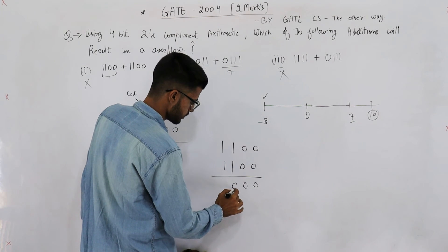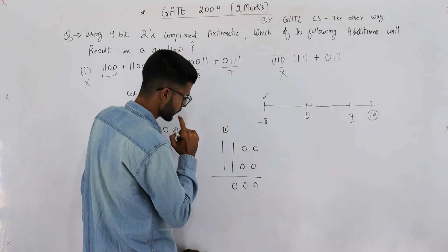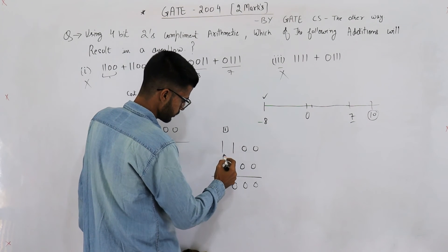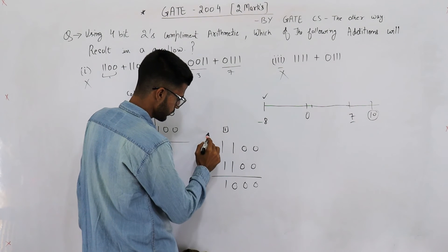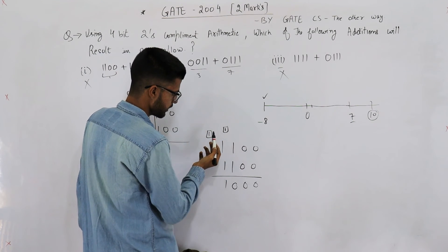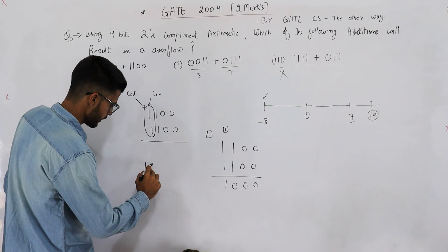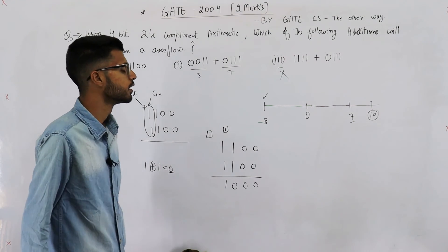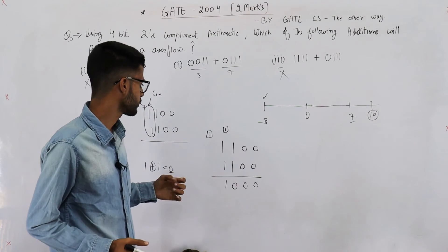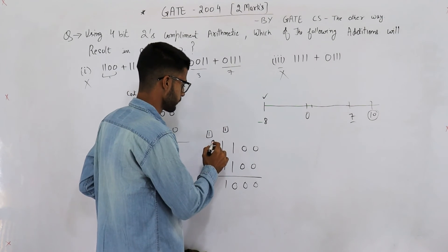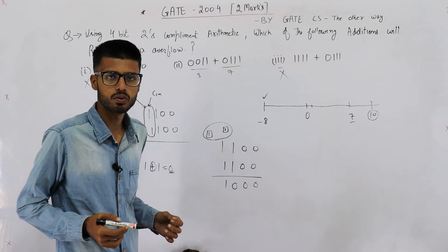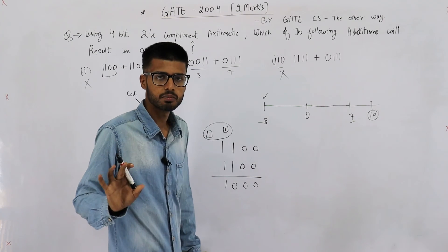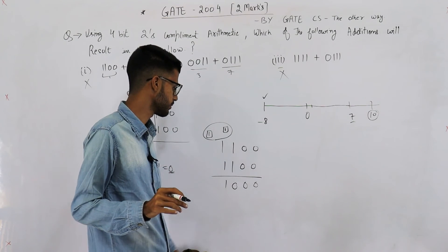1 + 1 + 1 is 0 with 1 carry, so carry-in to this bit is 1. When you add these three, you get 1; carry-out is 1. Carry-in and carry-out are both 1. 1 XOR 1 is 0; 0 means no overflow. If you cannot understand why we're taking XOR and why only these two numbers—carry-in and carry-out of the leftmost bit—you can see my theory lectures to understand it completely.